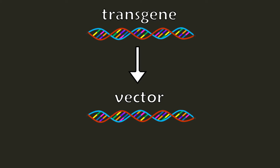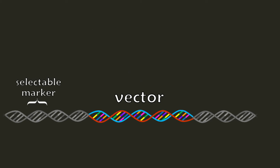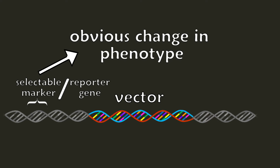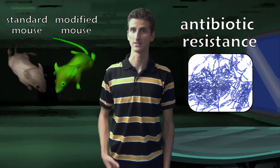Adding DNA instructions to it makes it into a vector, which means the transgene has everything it needs to integrate in a new organism. Many times a selectable marker or reporter gene is included, which causes an obvious change in an organism's phenotype to signal that the transfer worked. In mice, this is often a gene that makes them glow green under fluorescent light, and in bacteria, it's usually antibiotic resistance.